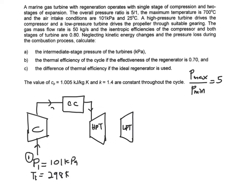So if we label this as state 2 and this is as state 3, so you are going to have your T3 is equal to 700 degrees C. So if you change it into Kelvin, you will have 973 Kelvin.